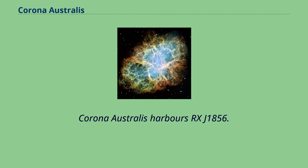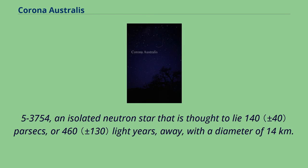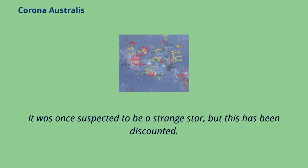Corona Australis harbors RX J1856.5-3754, an isolated neutron star that is thought to lie 140 parsecs, or 460 light-years, away, with a diameter of 14 kilometers. It was once suspected to be a strange star, but this has been discounted.